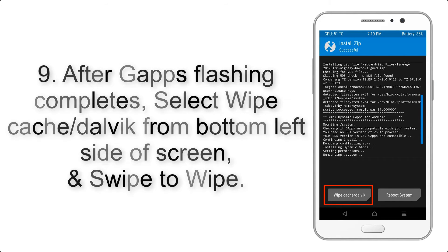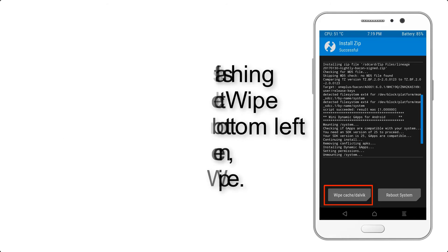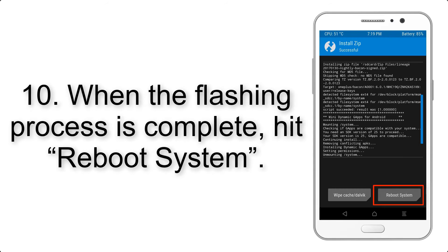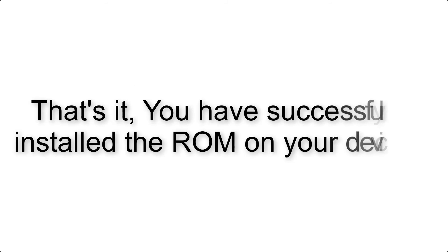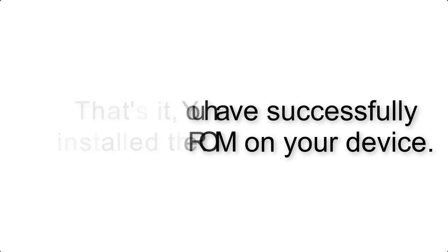From the bottom left side of the screen, swipe to wipe. Step 10: When the flashing process is complete, hit Reboot System. That's it — you have successfully installed the ROM on your device.